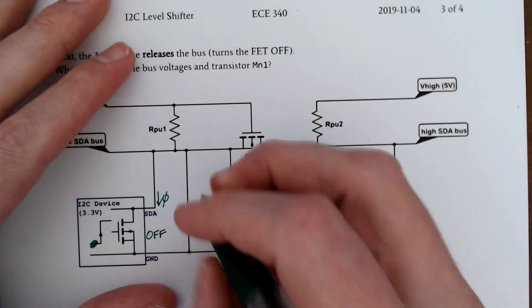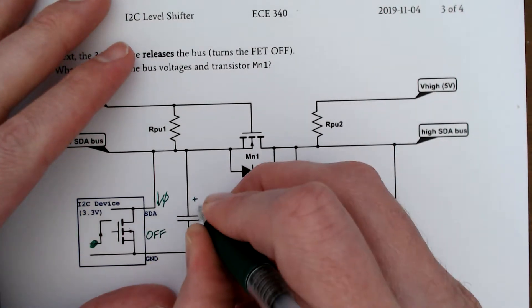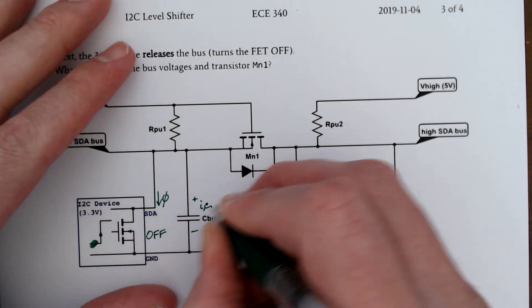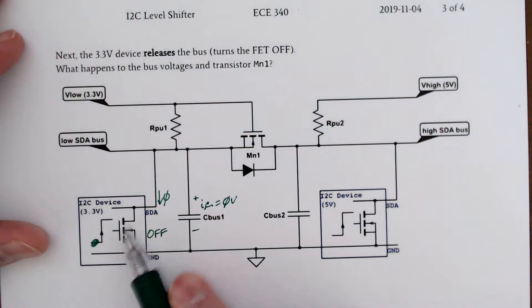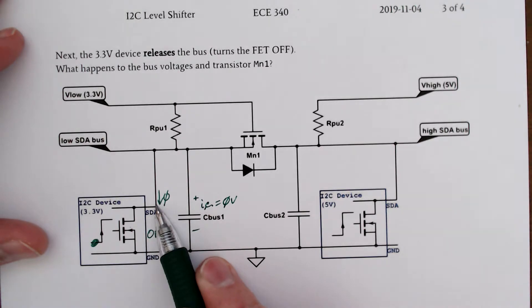Remember, this has an initial condition of zero volts, that's how we started. The moment that we let this off, our drain current of the MOSFET turns to zero, or goes to zero.